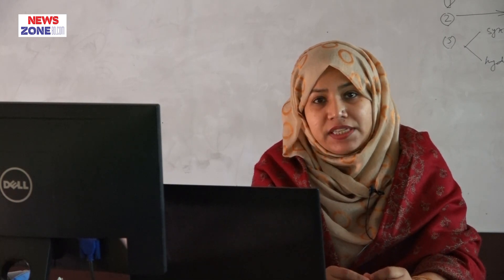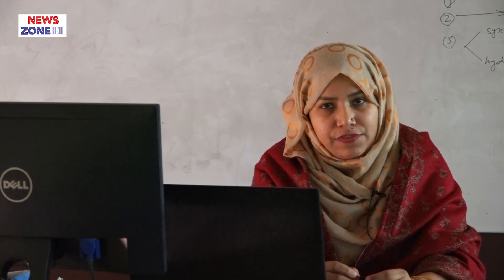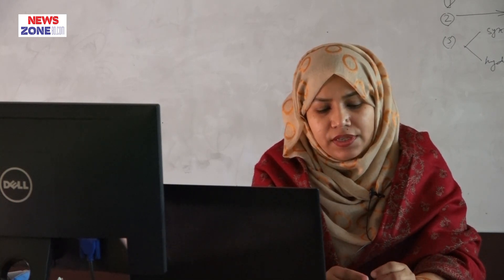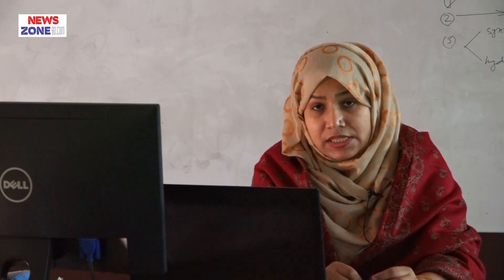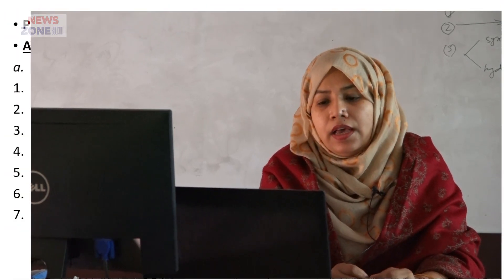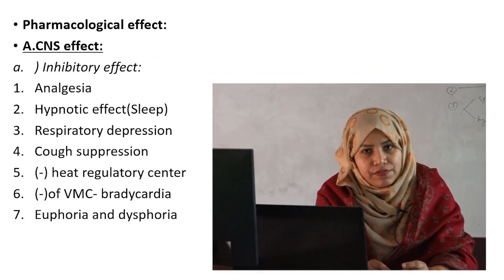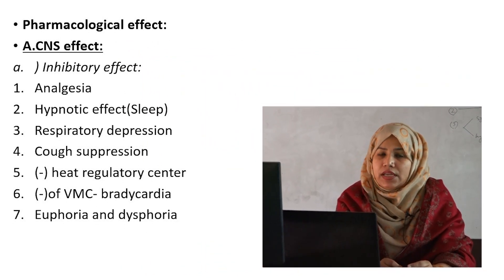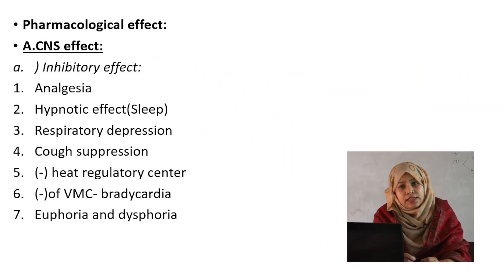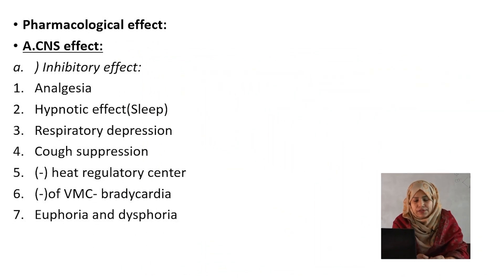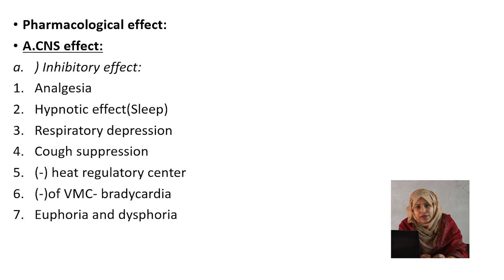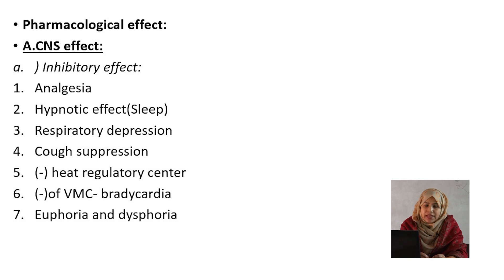In my last class, I mentioned the CNS effect and peripheral effect. Repeating again: the CNS effect has 2 types — number 1, inhibitory effect, and number 2, stimulatory effect. The inhibitory effects: number 1 is analgesia, that means relief of pain.